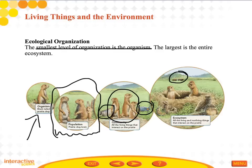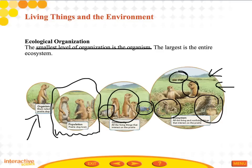The ecosystem includes bison, prairie dogs, owls, snakes, and all the living plants. But it also includes all of the abiotic factors of the environment — the sun, oxygen, temperature, soil, rocks — everything in the ecosystem that is abiotic and biotic.